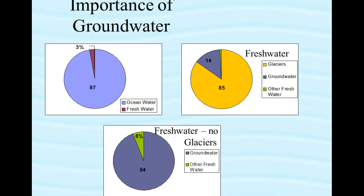First, let's get some important facts about fresh water into your notes. Only 3% of the Earth's water is fresh and potable. Potable — P-O-T-A-B-L-E — means that it can actually be consumed and used for cooking. Also write that although groundwater is only 0.6% of the Earth's water, that 0.6% represents 14% of the fresh water. And excluding glaciers, groundwater is 94% of the available fresh water.